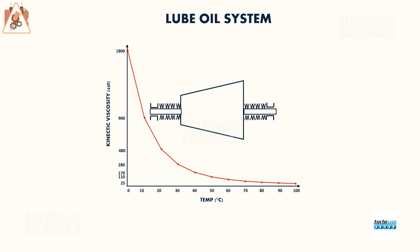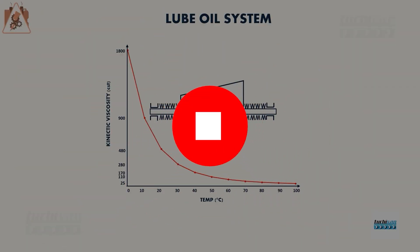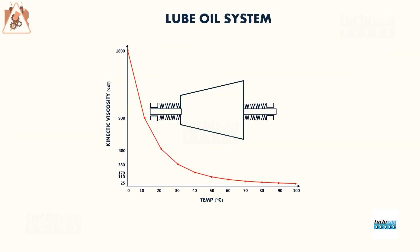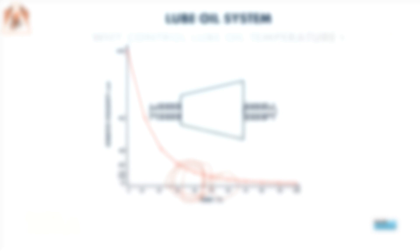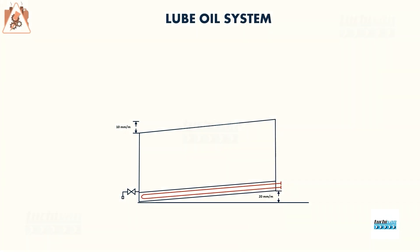This curve shows kinematic viscosity in centistokes (cSt) on the Y-axis and temperature on the X-axis, for a common lubricating oil. The normal operating range is approximately 40°C at inlet, and the oil exits the machine at around 60°C. The key insight is that viscosity is extremely dependent on temperature.